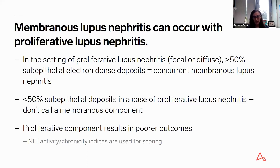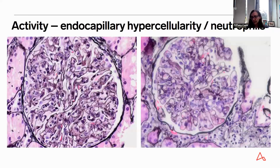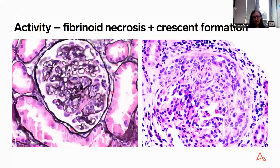Having a proliferative component results in active lesions scored on kidney biopsy by the NIH activity and chronicity indexes. The lesions include endocapillary hypercellularity — here on a Jones silver stain of a glomerulus, you can see the glomerular capillary loops are occluded by mononuclear cells or neutrophils. Fibrinoid necrosis and crescent formation are two of the most destructive glomerular lesions. On a Jones silver stain, we can see disruption of the glomerular capillary tuft with extravasated fibrin and a cellular crescent. Fibrocellular crescents are also considered active glomerular lesions.